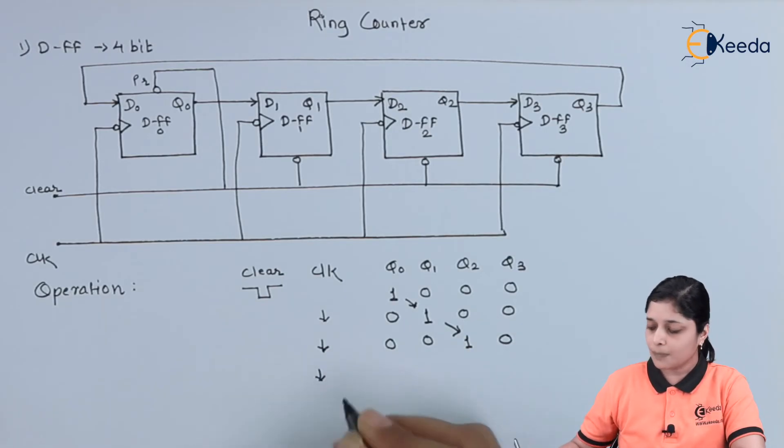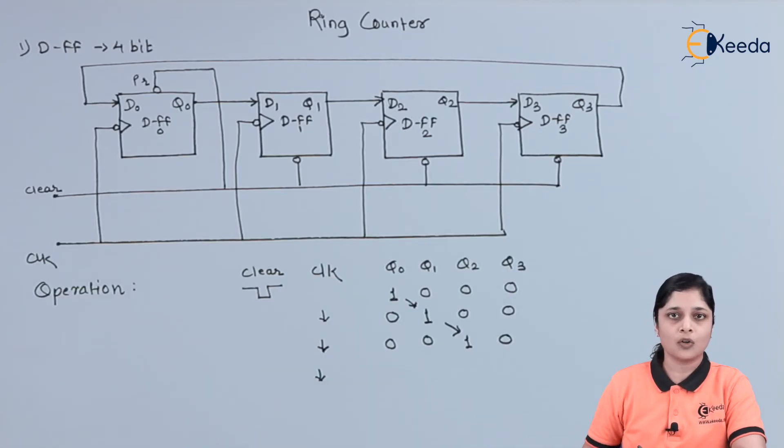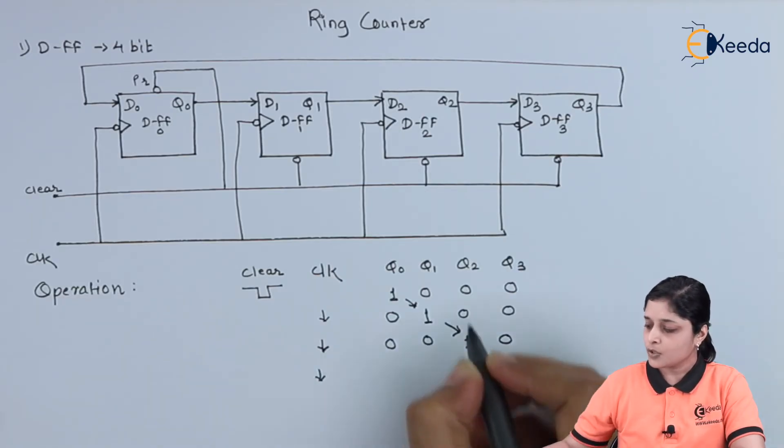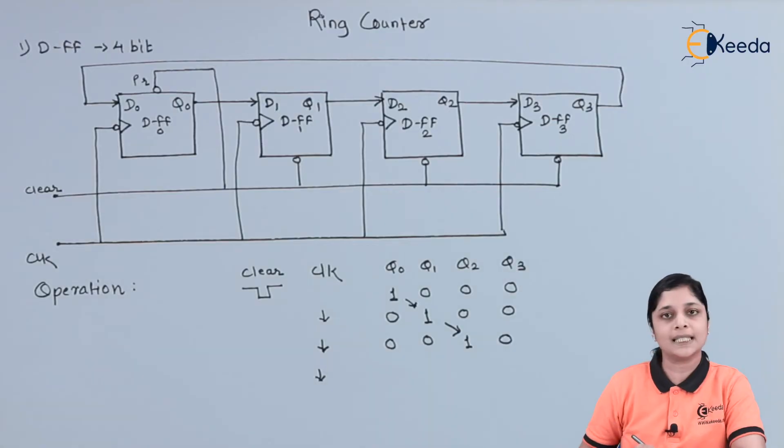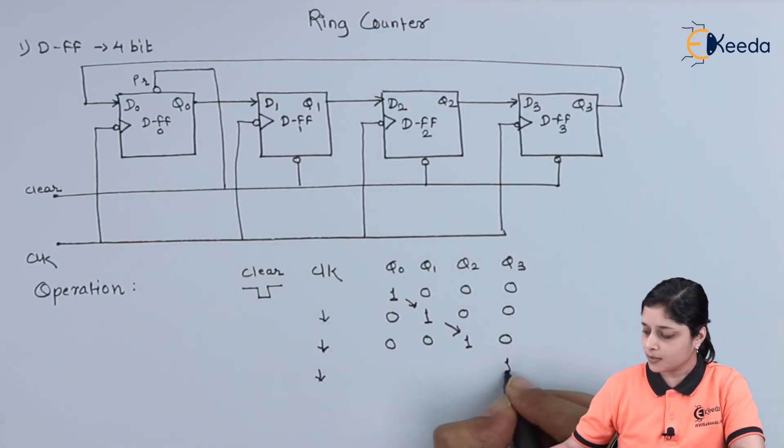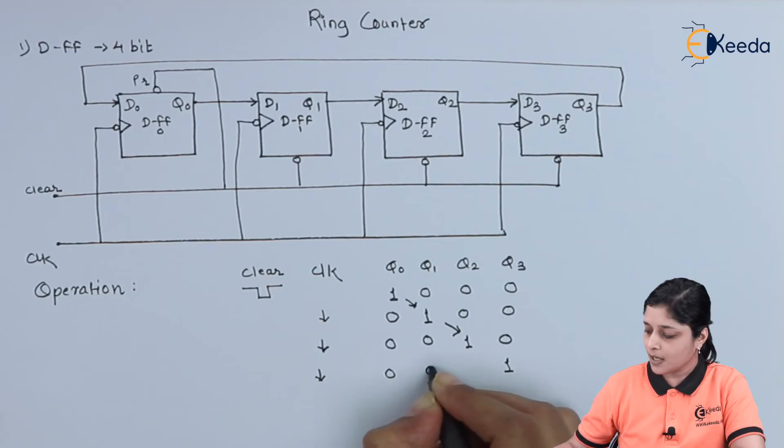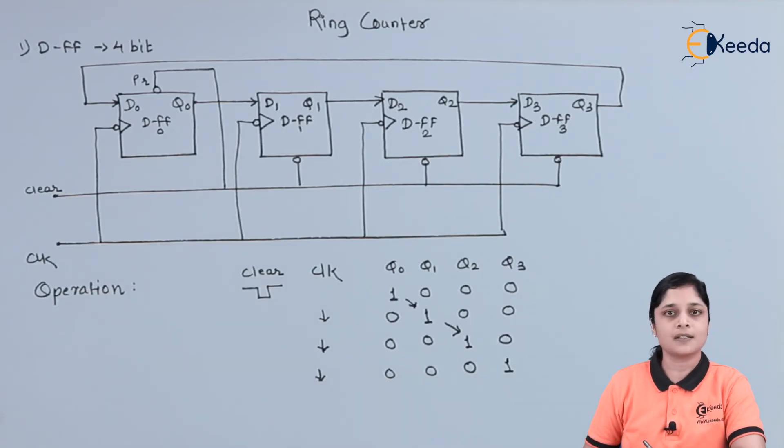Again, we give application of negative edge-triggered clock. This Q2 is fed to the D3 and for D3, we get 1. And remaining are the outputs again 0.